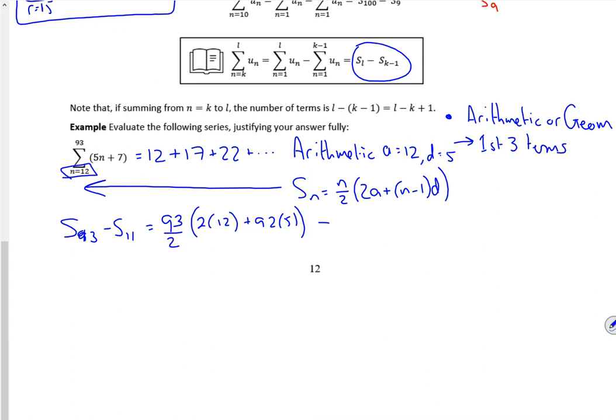So 93 over 2, 2 lots of 12 plus 92 lots of 5, minus the sum of the first 11 terms. So 11 over 2, 2 lots of 12 plus 10 lots of 5. If I put that in the calculator, I get 22,909. So because I wanted the 12th term, or from the 12th term, I take away the first 11. Please be really clear on that.